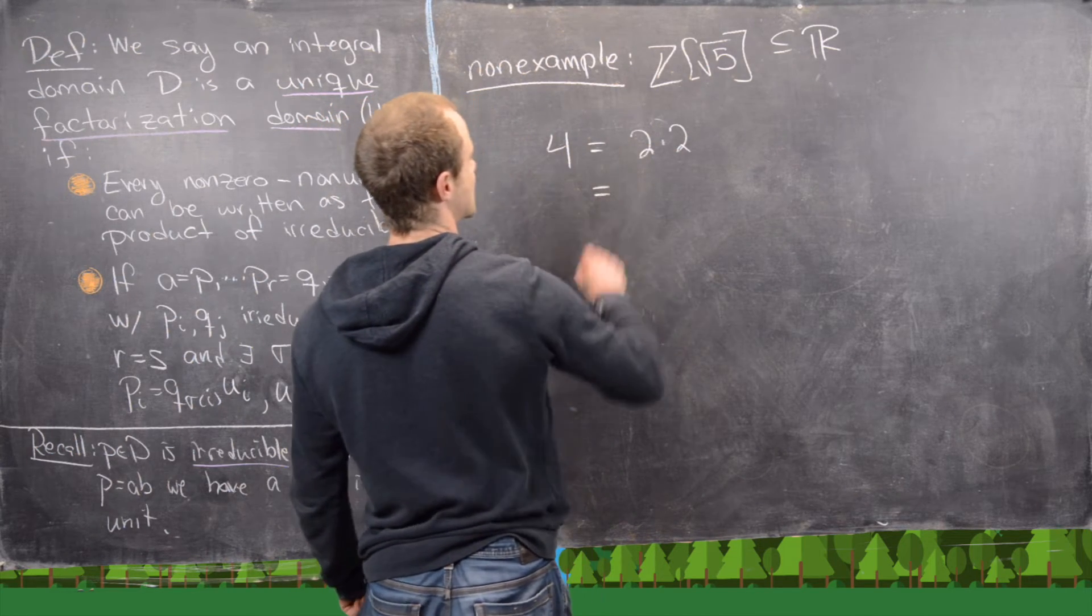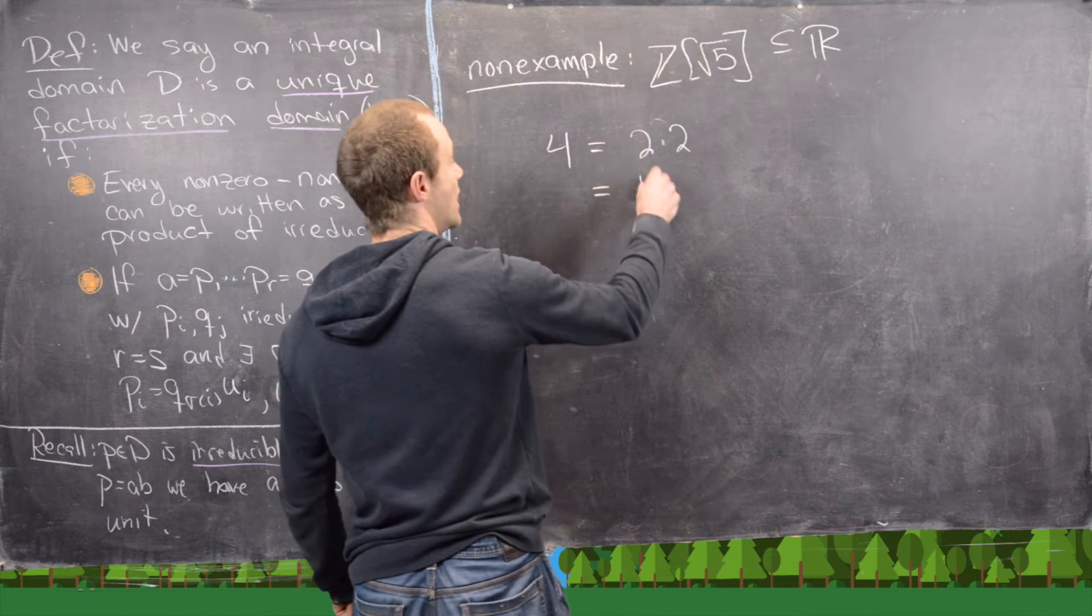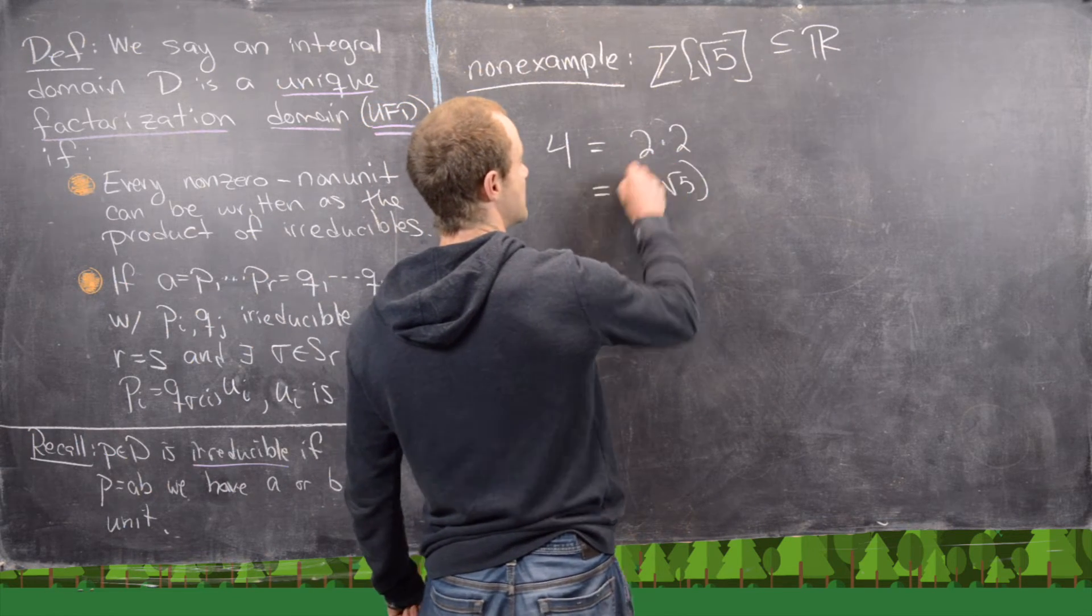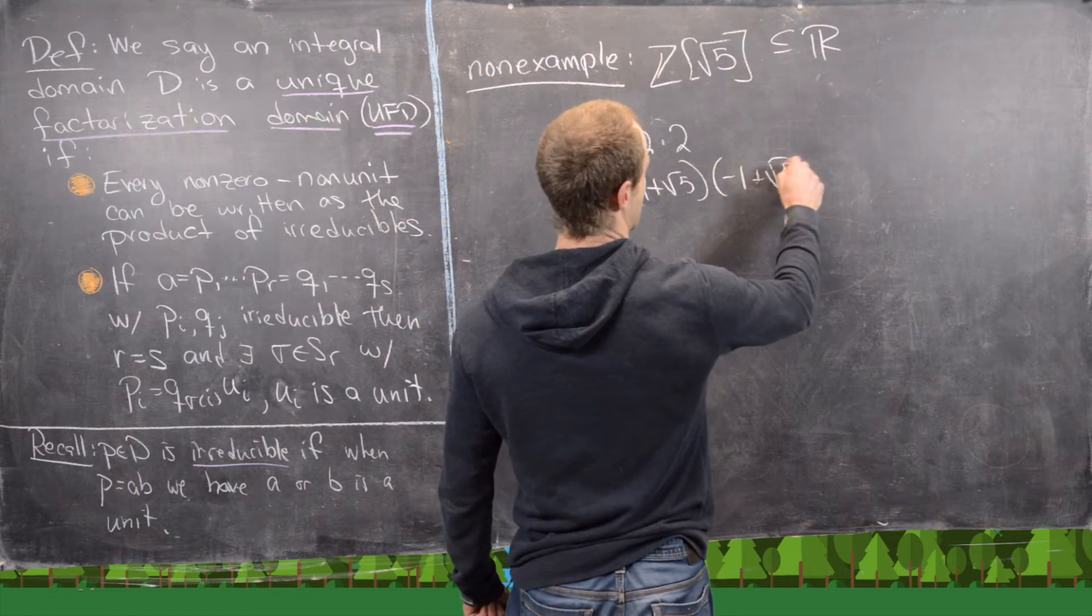So 4 is equal to 2 times 2 and it's also equal to 1 plus the square root of 5 times negative 1 plus the square root of 5.